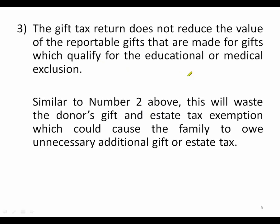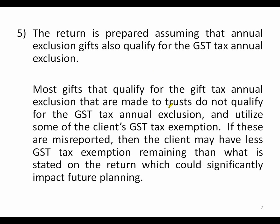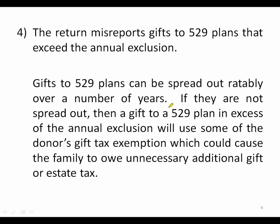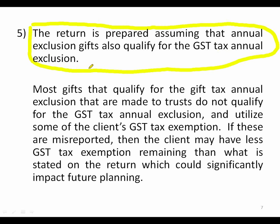Another common mistake is misreporting gifts to 529 plans. 529 plan gifts can be spread out ratably over a five-year period; if you don't do that, you may use exemption unnecessarily. We also see preparers assuming that an annual exclusion gift automatically qualifies for the GST annual exclusion. Most times when a gift is made to a trust benefiting both children and grandchildren, it won't qualify for the GST annual exclusion — so you still need to allocate the full amount for GST purposes even if Crummey withdrawal powers reduce the gift tax value.